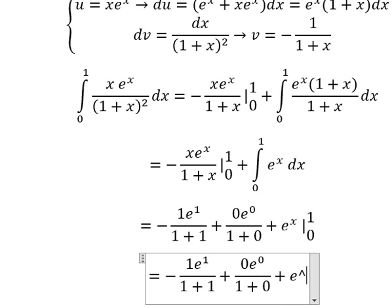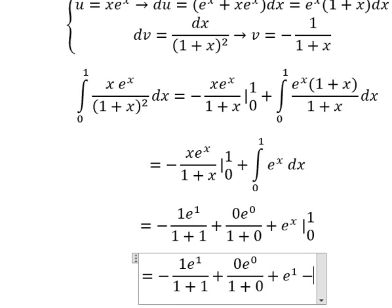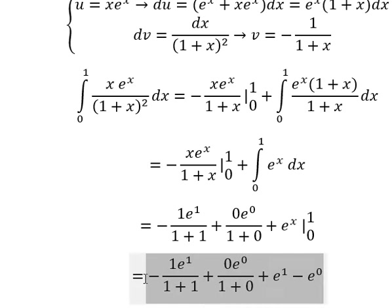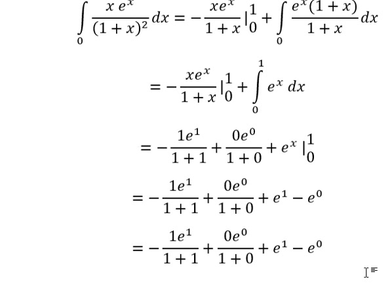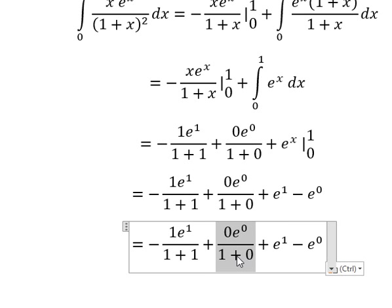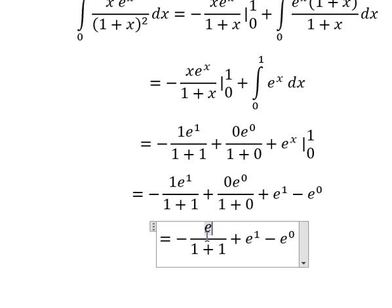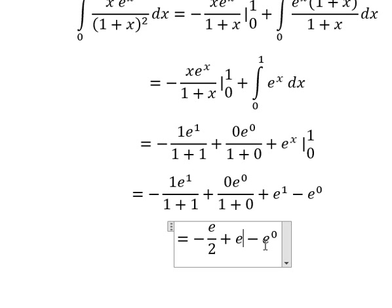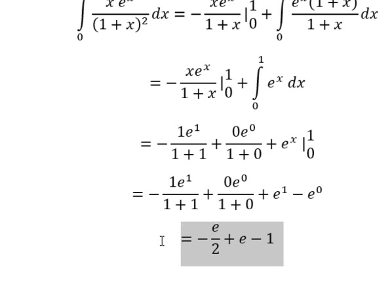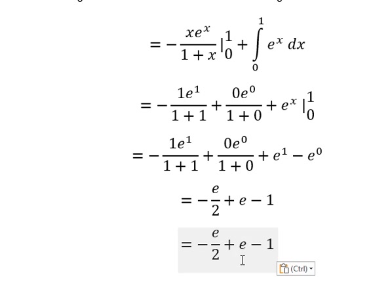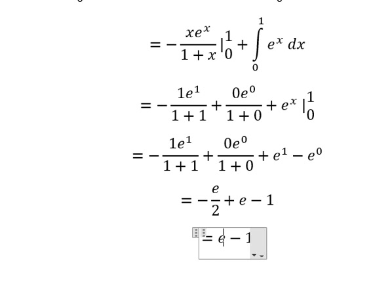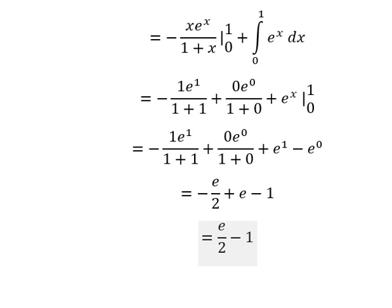So we have e to the power of one minus e to the power of zero. This gives zero here, e over two here, e here, and one. We simplify, and we get positive e over two. This is the end — thank you for watching.